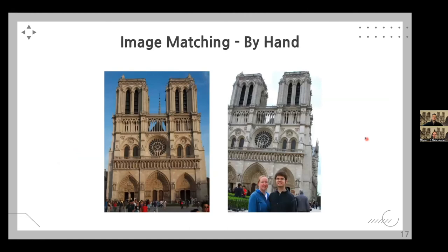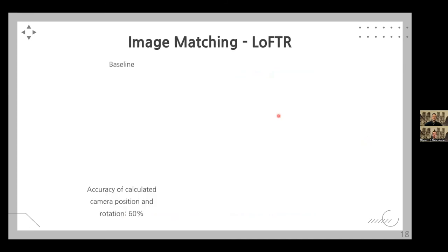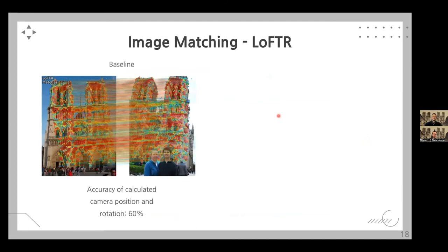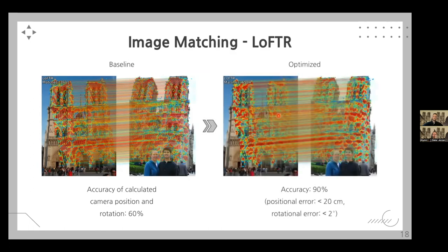If you were to do image matching by hand with two images of Notre Dame, you might identify similar towers, windows, and gates. But feeding the same image pair into LoFTR, it found over 3,900 common features. We can nicely see how the persons in front of the cathedral are not matched. Based on our training data, initial accuracy was 60%, but after some optimization of LoFTR we increased accuracy to around 90%, meaning a positional error below 20 centimeters and a rotational error below two degrees.